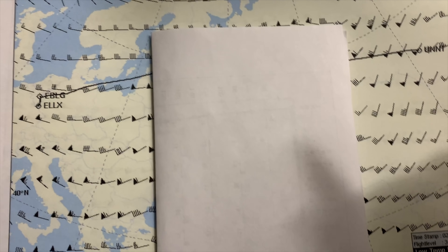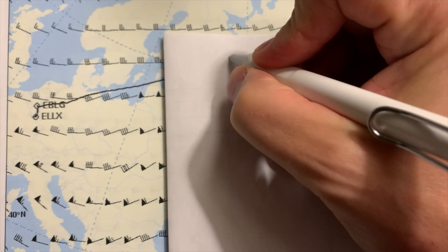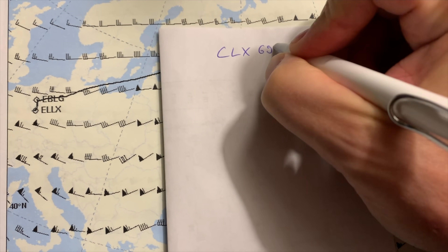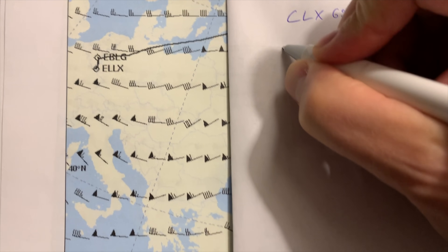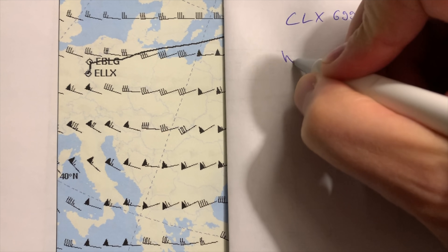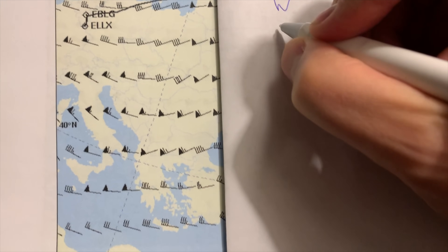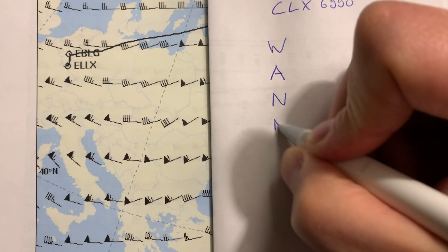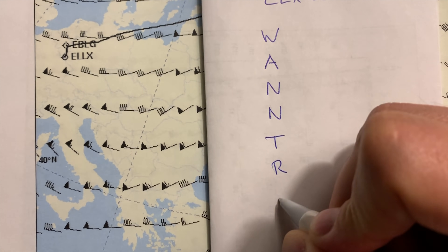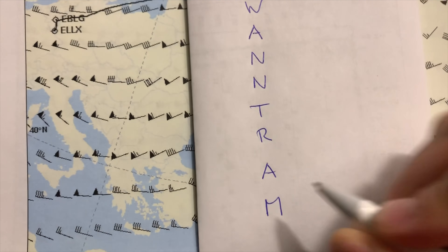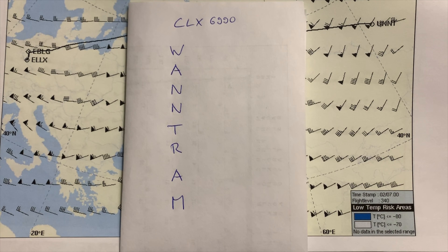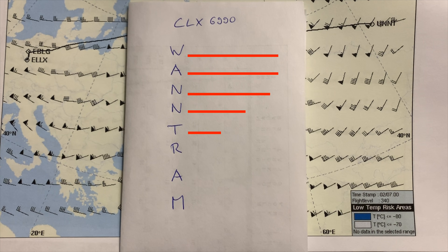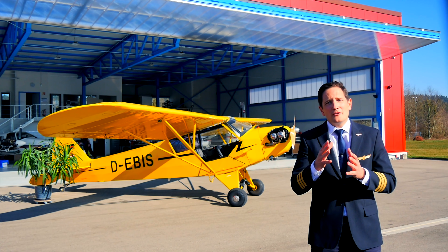Grab a piece of paper, write down your call sign and then the first letter W, followed by A, N, N, T, R, A, and M below it. Then take the time to make a few notes beside every letter.